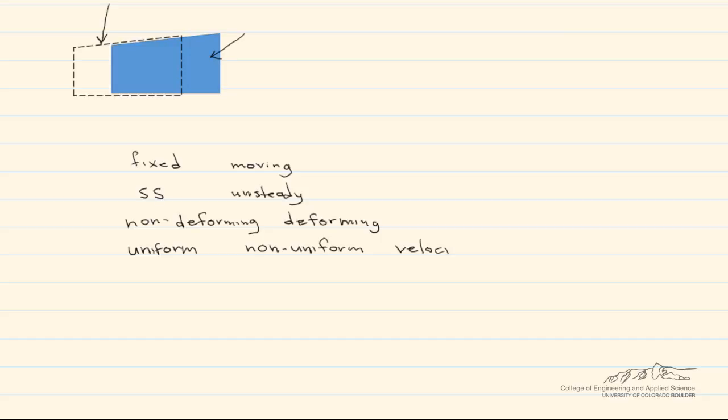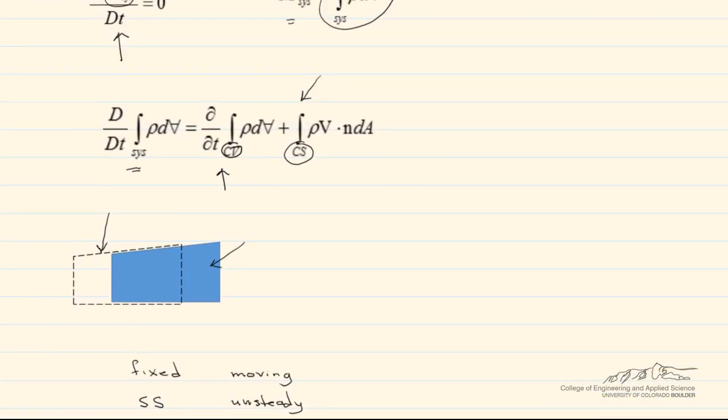When I say that, that means you can have a uniform velocity coming into the control volume through one control surface but a non-uniform velocity exiting the control volume. These all use the same basic equation that I showed you up here. However, due to the changes made, the equations can look quite different.